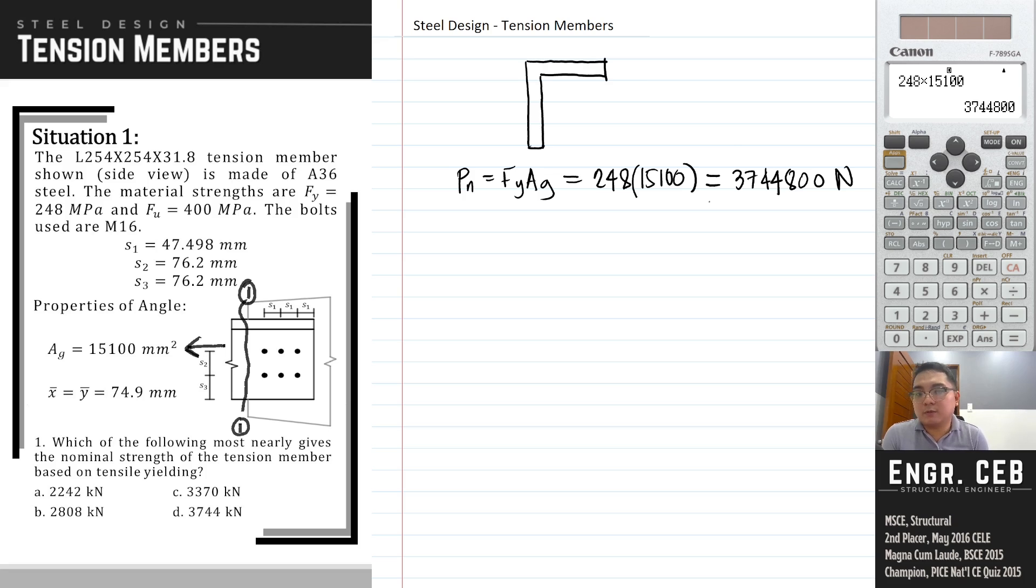If we divide this by 1,000, it will become kN, the units will become kN. Therefore, the nominal strength is 3744.8 kN.